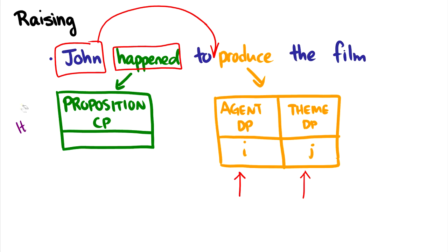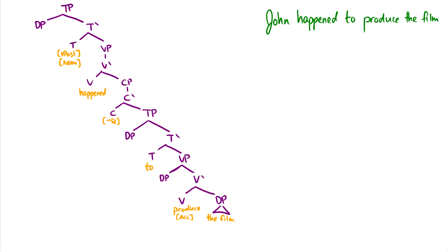This 'happened' can also take an expletive, so we know there's no theta role for John. It looks like John came from 'produce' and moved all the way up into the TP above 'happened.' In the derivation, John is in the spec VP of 'produce,' so it is the agent of 'produce' and it's getting a theta role.